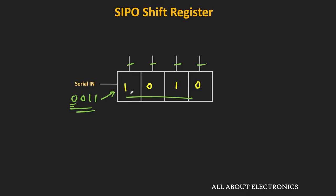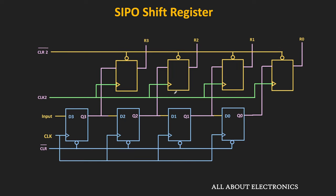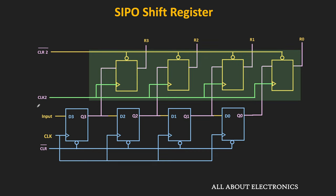To avoid that, we need to move this data into some other register. Commercially available shift registers also have a built-in additional register for the same purpose. Once 1010 is shifted inside the shift register, the same can be stored in the upper register by applying a clock signal to it. After 4 clock cycles of the shift register, we apply the clock to the upper register, and with that clock, the data of the shift register gets stored in the upper register and is available at the output. Until we apply the next clock to the upper register, the data will not change, and meanwhile the shift register can start shifting new data — yet the output of the overall register will not change.